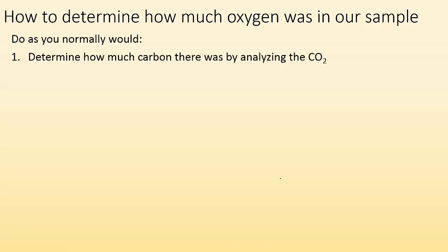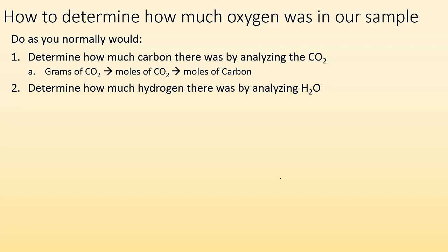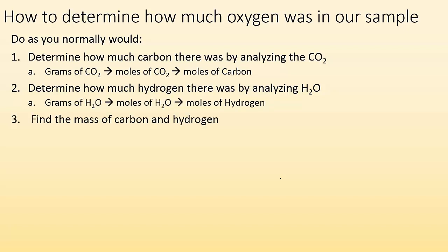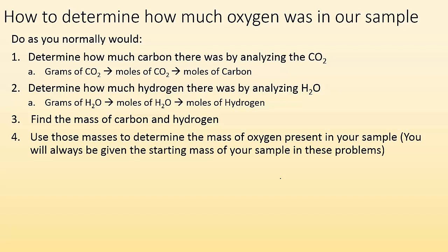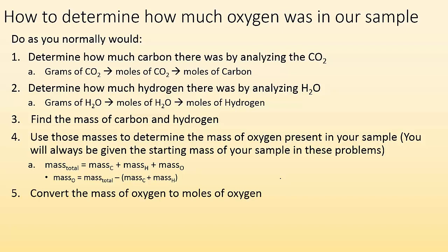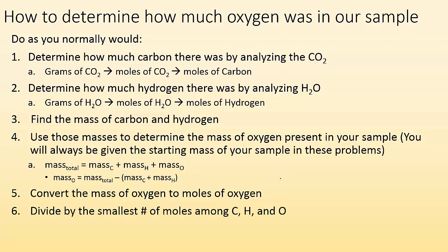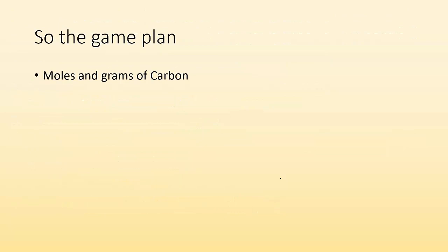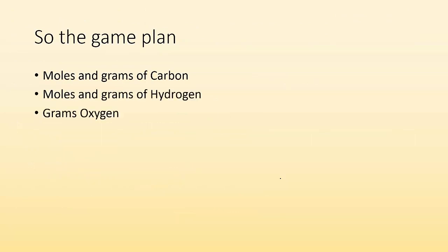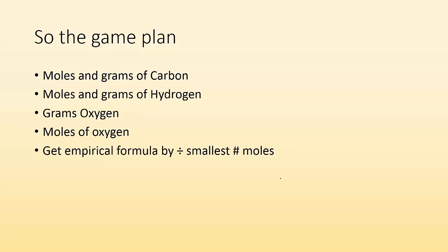The process: first, determine how much carbon there was by analyzing CO2 — grams of CO2 to moles of CO2 to moles of carbon. Second, determine how much hydrogen by analyzing H2O — grams of H2O to moles of H2O to moles of hydrogen. Then you've got to find the mass of carbon and hydrogen by converting moles to grams. Once you have those masses, determine the mass of oxygen: mass of oxygen equals total mass minus mass of carbon minus mass of hydrogen. Then convert grams of oxygen to moles, and finally divide all moles by the smallest number of moles to get the empirical formula.